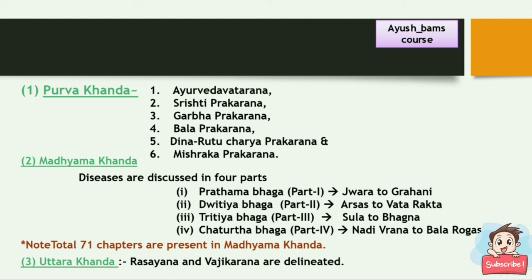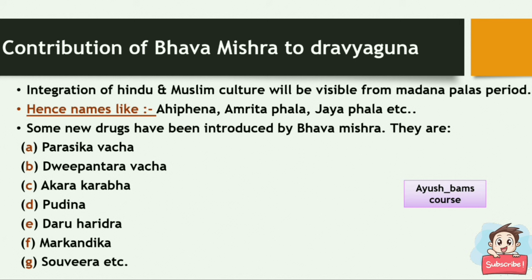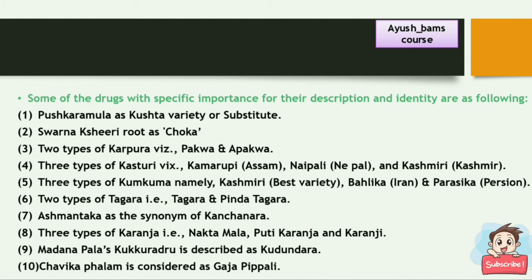Looking at Bhavamishra's contribution to Dravya Guna: the integration of Hindu and Muslim culture is visible, with names like Ahifena, Amrita Fala, Jaya Fala, etc. Some new drugs introduced by Bhavamishra include Parashikavacha, Dvipantravacha, Akarakarbha, Kudina, Daruharidra, Markandika, Sovira, etc.